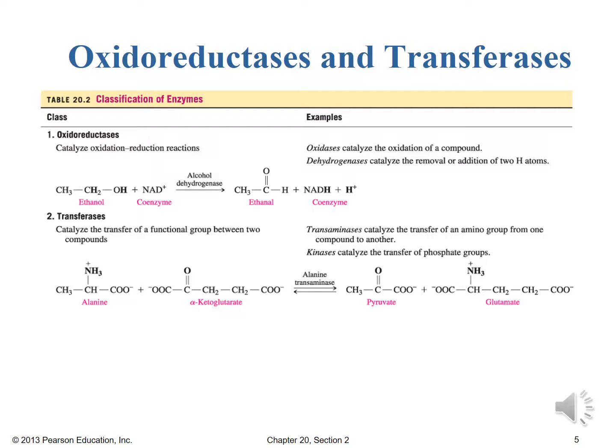So the oxidases catalyze the oxidation of a compound typically by increasing the number of bonds to oxygen. The dehydrogenases catalyze the removal or addition of two hydrogen atoms. So removal of hydrogen we associate with oxidation. Addition of hydrogen we associate with reduction.